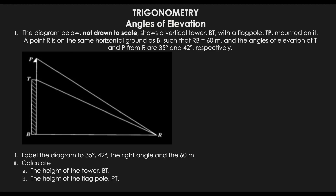For this question we will be looking at angles of elevation. The question says the diagram below, not drawn to scale, shows a vertical tower BT with a flagpole TP. This is the tower from B to T, and from T to P is the flag. The flag is mounted on the pole. Point R is on the same horizontal ground as B — this part here represents the horizontal ground, which you can imagine as grass.